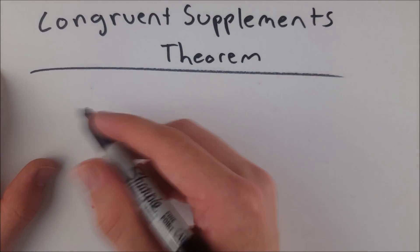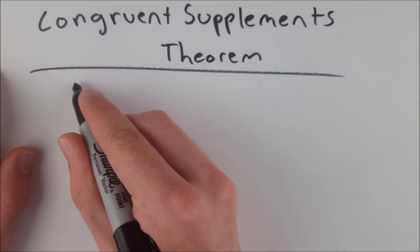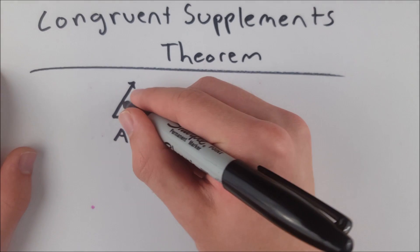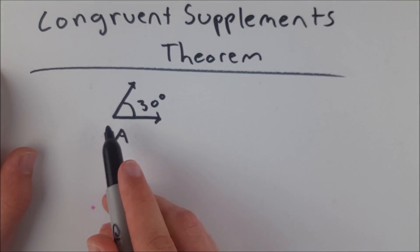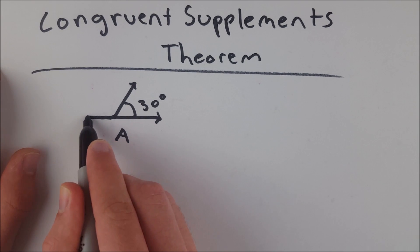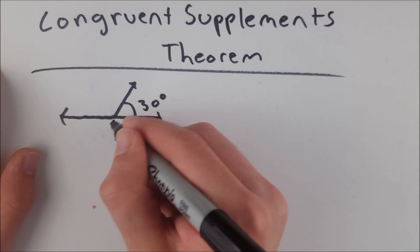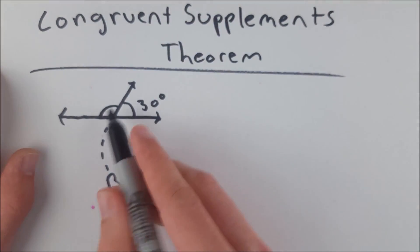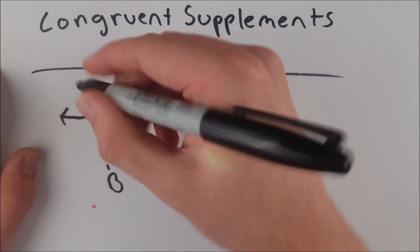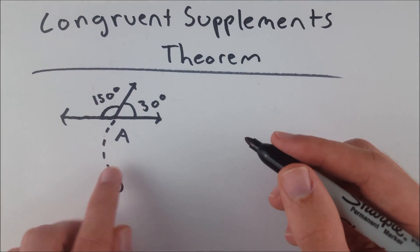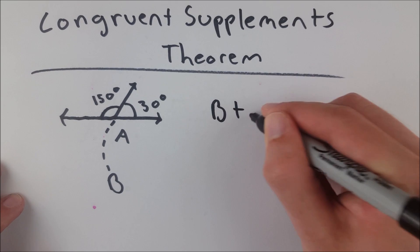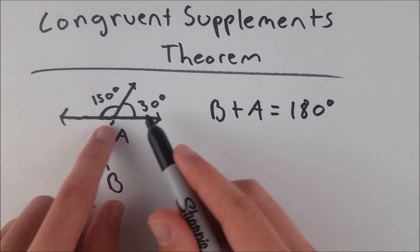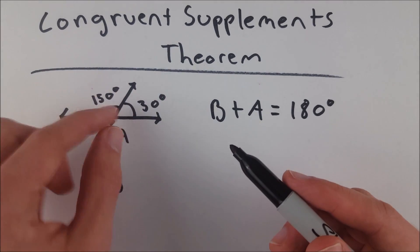So, congruent supplements — for those of you that don't know, angles are called supplementary if they add up to 180 degrees. For example, we have an angle — let's call this angle A — and let's say it has a measure of 30 degrees. An angle supplementary to angle A would be this angle right adjacent to it. Let's call it angle B. This angle has a measure of 150 degrees. So B plus A equals 180 degrees, and you can see they form a linear pair — together they make a straight angle of 180 degrees because they are adjacent.